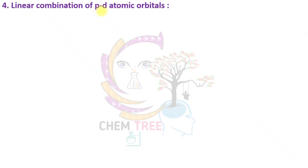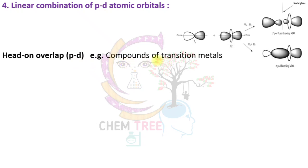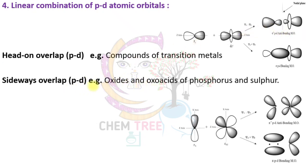Next is p-d overlapping. In head-on overlap, seen in compounds of transition metals (d-block elements), pz overlaps with d_z² of the d orbital to form sigma and sigma star molecular orbitals. In sideways overlap, examples include sulfur dioxide, phosphoric acid, and oxo acids of phosphorus and sulfur. Here, px overlaps with d_xz or d_xy and d_yz, forming pi and pi star molecular orbitals.